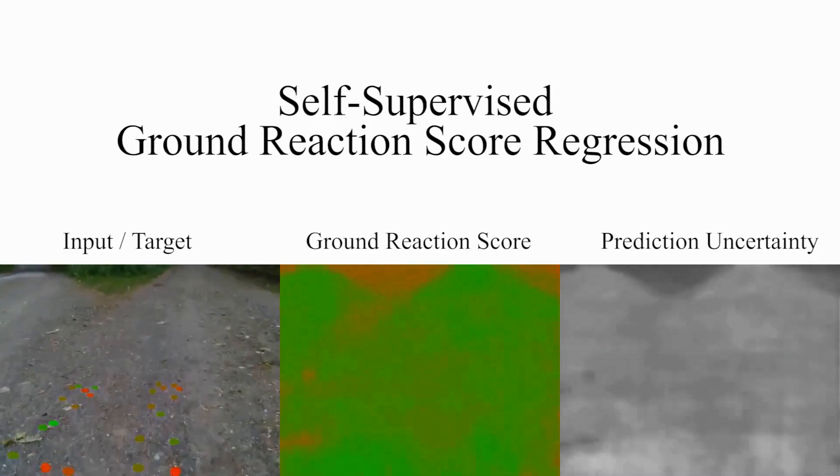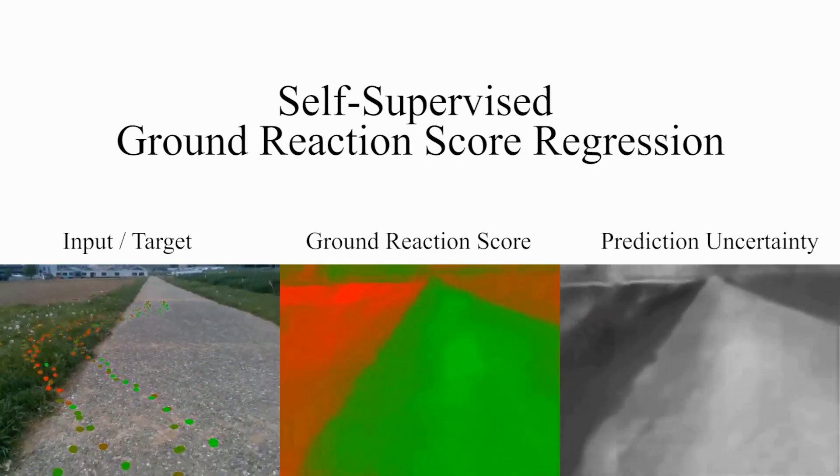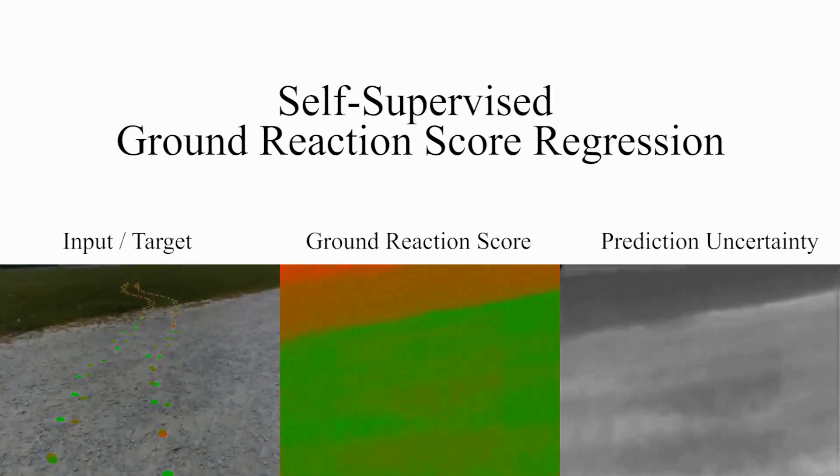For the case of fully self-supervised learning, terrain transitions are identified even more precisely. The ground reaction score is predicted accurately and densely for various terrain.